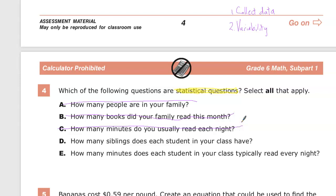D, how many siblings does each student in your class have? Now this absolutely meets the criteria for collecting data. I'm going to have to go to each one of the students in my class and ask them about their number of siblings. That's going to be a requirement for this question. So one is met and two, variability.